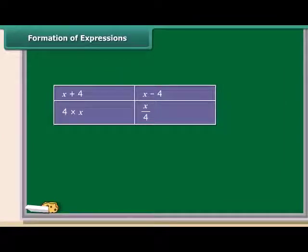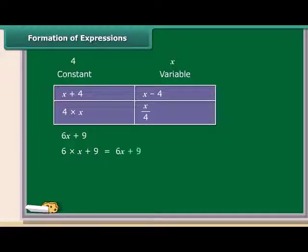Algebraic expressions are formed by combining variables and constants with the help of addition, subtraction, multiplication, and division. Let us see how the algebraic expression 6x plus 9 is formed. It is really simple. First multiply variable x with constant 6, then add a constant 9 to the product. Similarly, 14y minus 30 is obtained by first multiplying y by 14 and then subtracting 30 from the product.